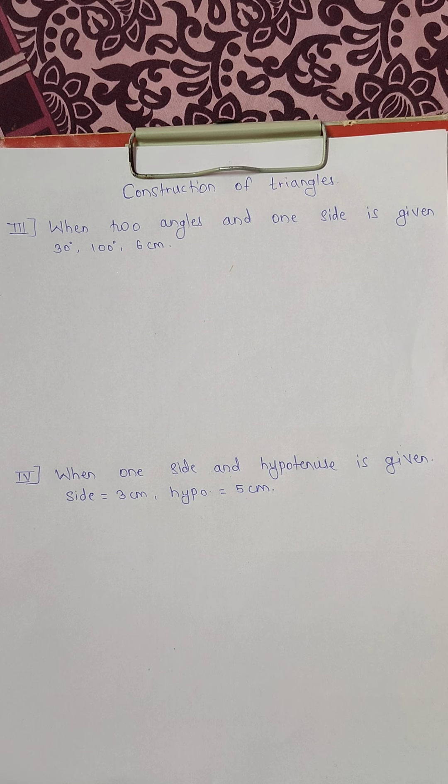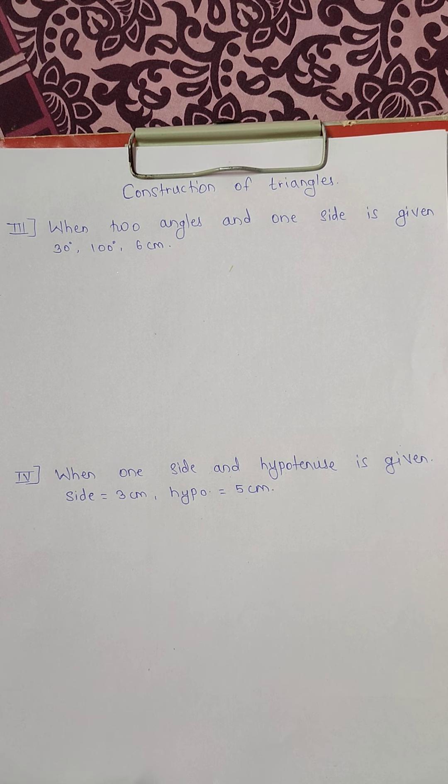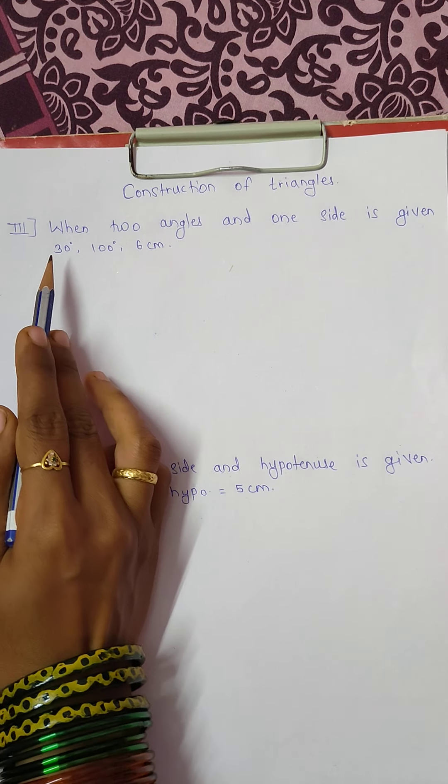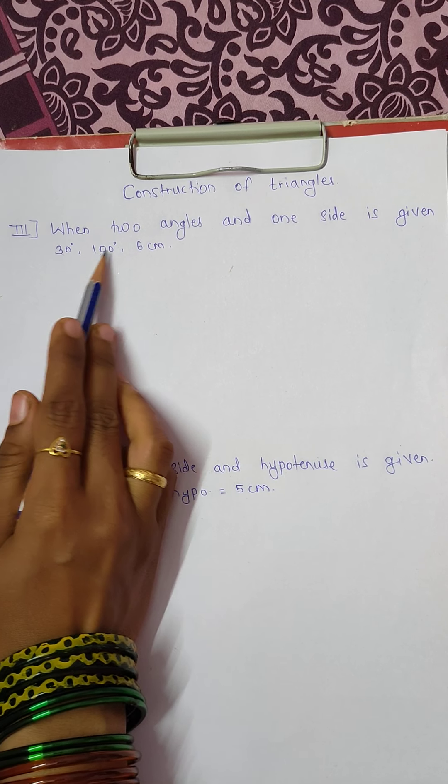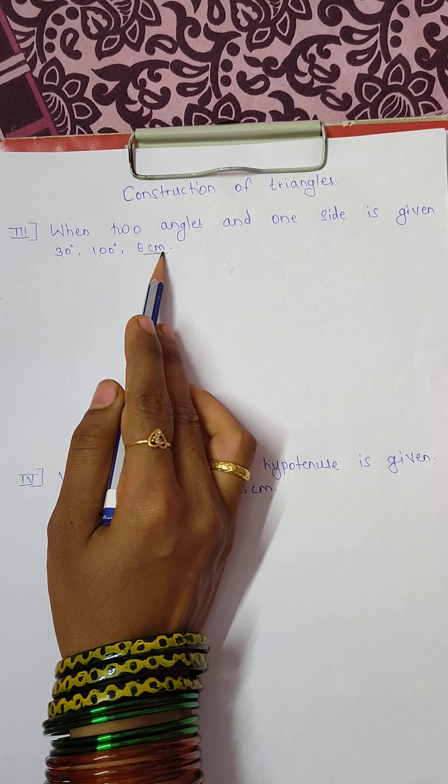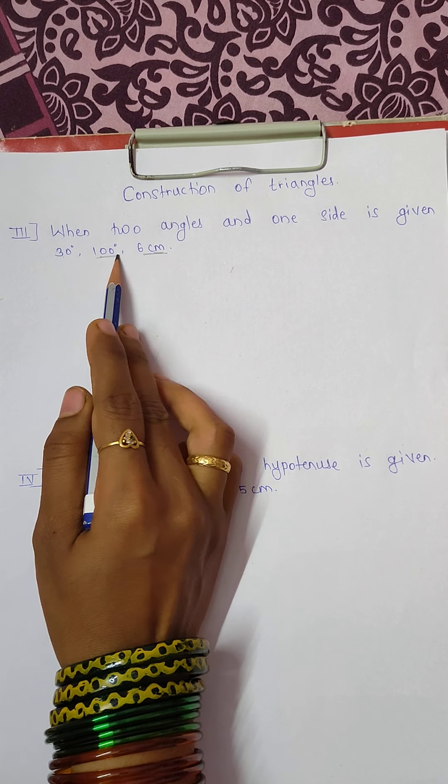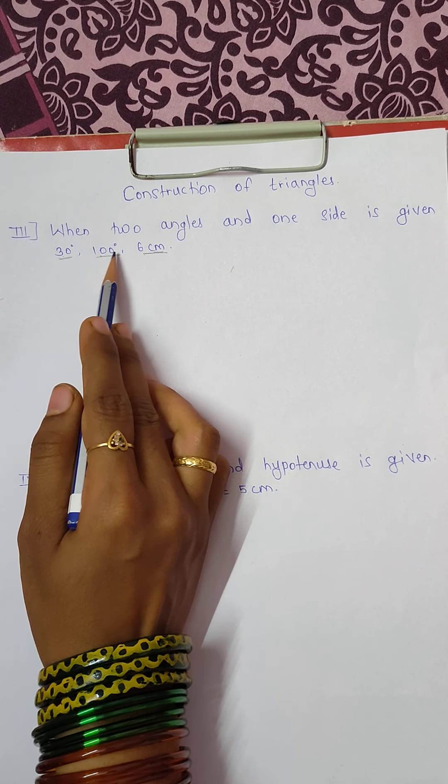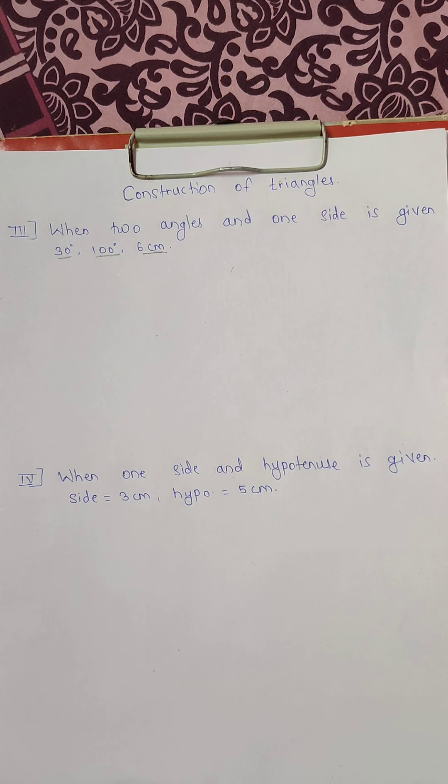Let's construct a triangle when two angles and a side included by them is given. We have one example: 30 degrees, 100 degrees, and 6 centimeters. So 6 centimeters is the side and 100 degrees and 30 degrees are the two angles of that respective triangle.